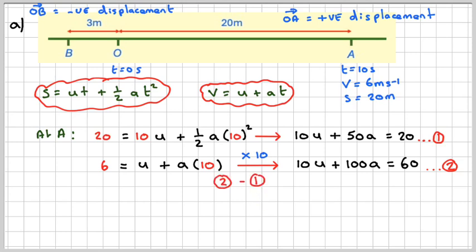Now if we do equation 2 minus equation 1, we're going to get 10U minus 10U, which is nothing. 100A minus 50A is going to give me 50A, and 60 minus 20, which is 40, which will give me that the acceleration is 4 fifths metres per second squared.